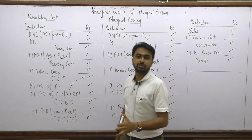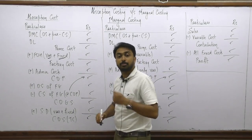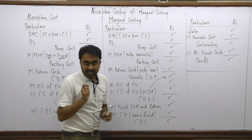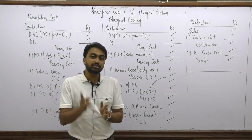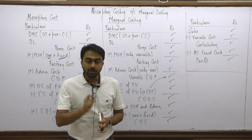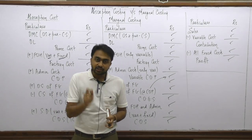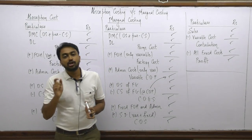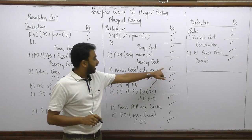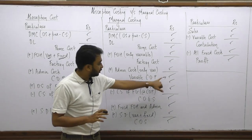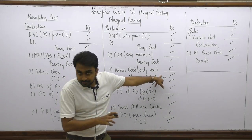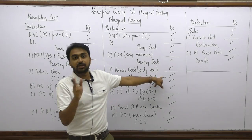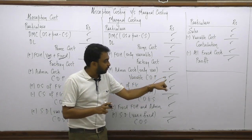Now, how is marginal costing different from absorption costing? In marginal costing, we use the same format, but with one key difference: we do not use fixed cost to value closing stock. Note that we are not ignoring fixed costs — fixed cost is still a cost in marginal costing. We simply do not include fixed costs when valuing closing stock, which means no fixed content is needed up to the cost of production stage, since closing stock is valued at COP.